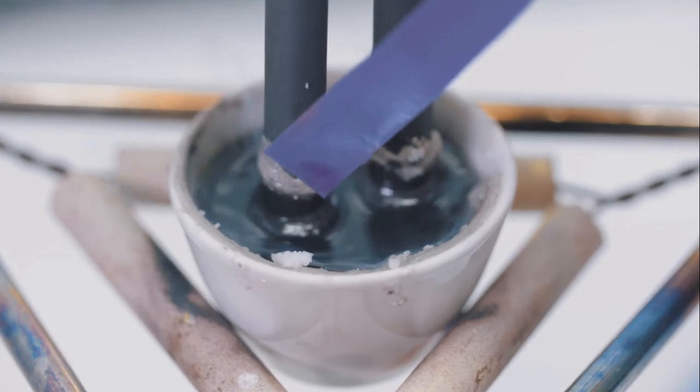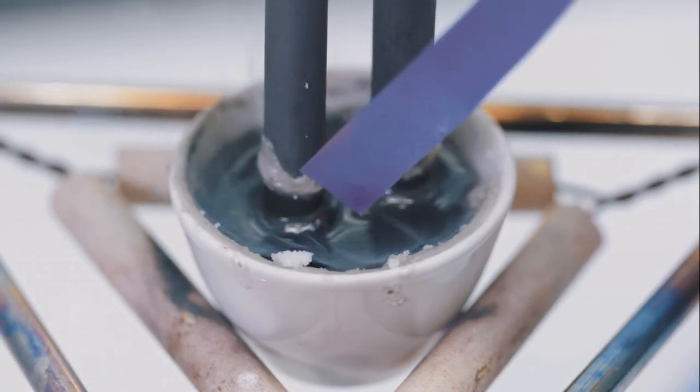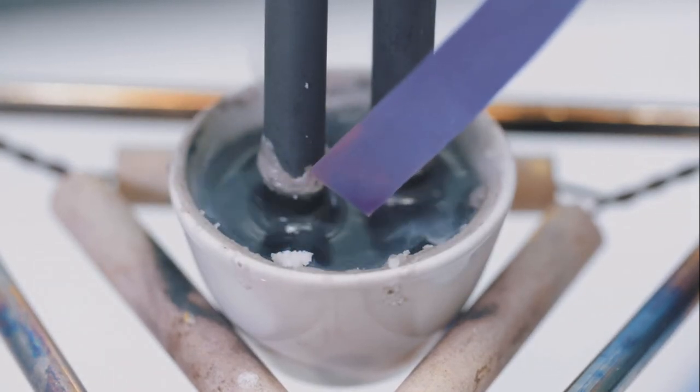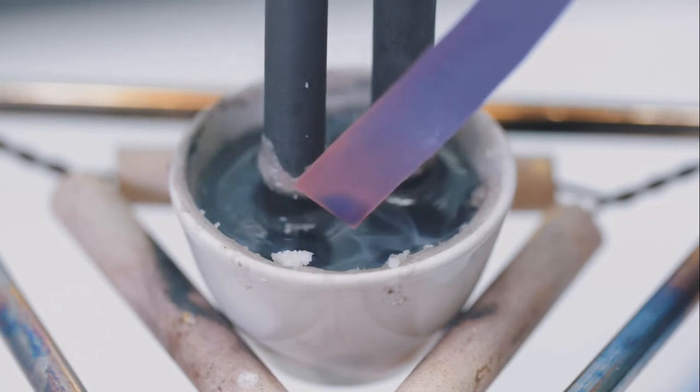Test the gas produced with damp litmus paper. It quickly becomes bleached, confirming that the gas is chlorine.